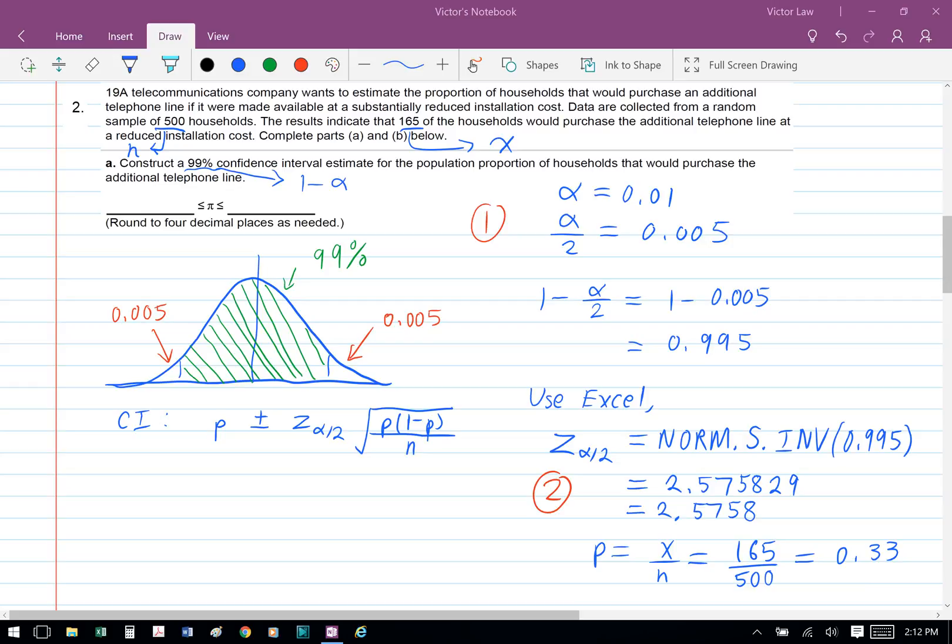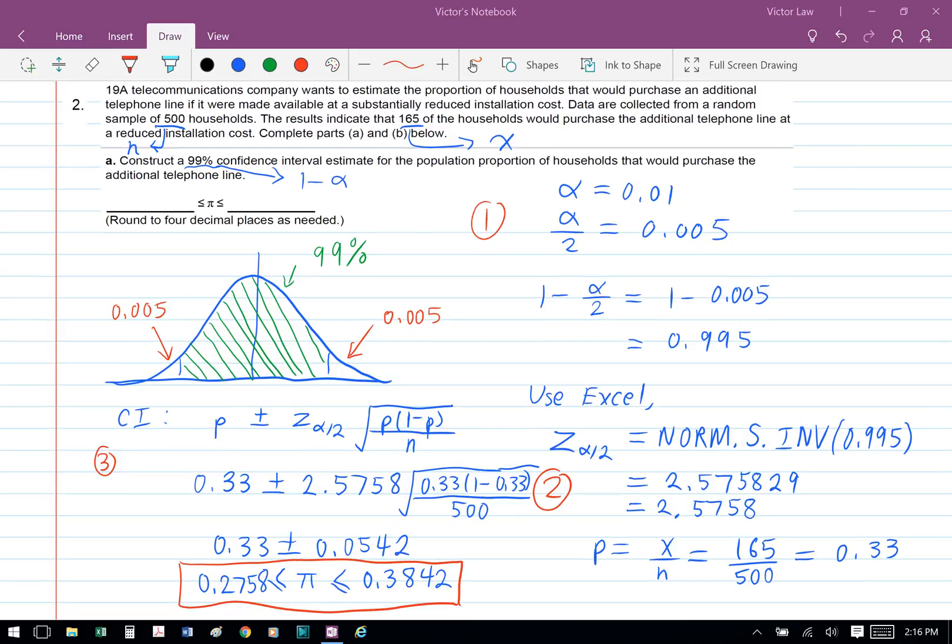And we're also missing p as well. So p equals x over n, so we have 165 divided by 500, which is 0.33. Finally, we can plug the number into the formula, so we have 0.33 plus minus 2.5758 times square root 0.33 bracket 1 minus 0.33 divided by 500.